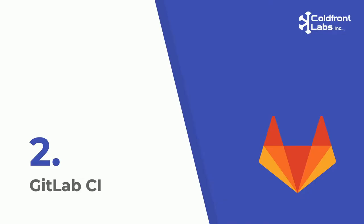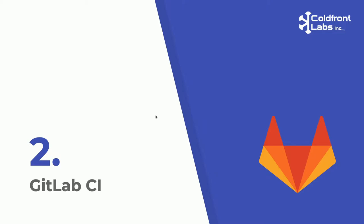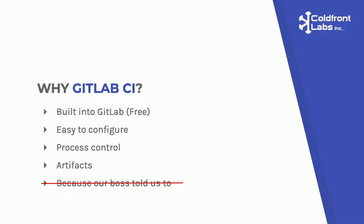Now that you're all masters of the CI/CD lifestyle, we're going to get into our main topic: GitLab CI. Before we go into the nitty-gritty, we'll tell you why and how we use it. The first and most obvious reason is that we host a lot of our projects on GitLab — for internal use, personal projects, or clients. GitLab CI is built into GitLab and it's free. The next reason is it's really easy to configure — all you have to do is add your GitLab CI file to the root of your repository, and it'll run every time you push.